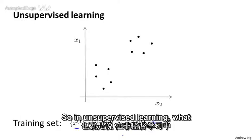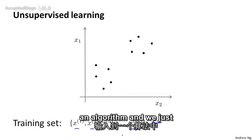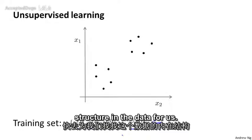So in unsupervised learning, what we do is we give this sort of unlabeled training set to an algorithm, and we just ask the algorithm, find some structure in the data for us.